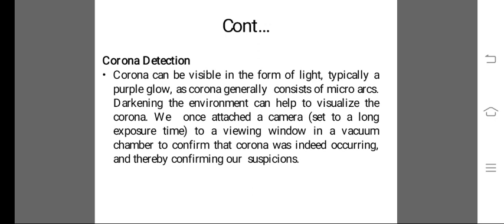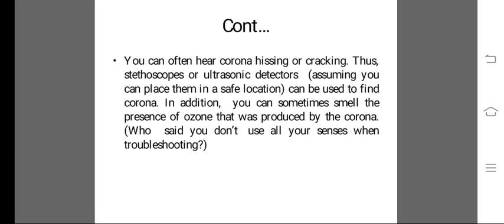Corona Detection. Corona can be visible in the form of light, typically a purple glow, as corona generally consists of micro arcs. Darkening the environment can help to visualize the corona. We once attached a camera to a viewing window in a vacuum chamber to confirm that corona was indeed occurring, thereby confirming our suspicions. You can often hear corona hissing or cracking. Thus, a stethoscope or ultrasonic detectors can be used to find corona. In addition, you can sometimes smell the presence of ozone produced by the corona.